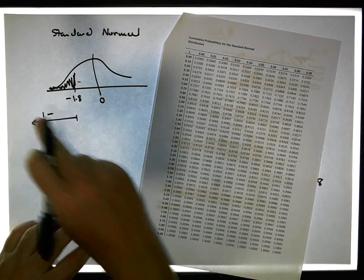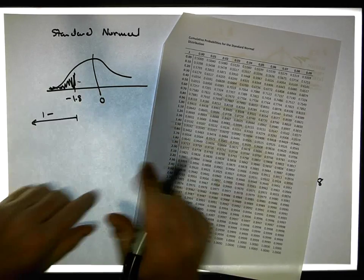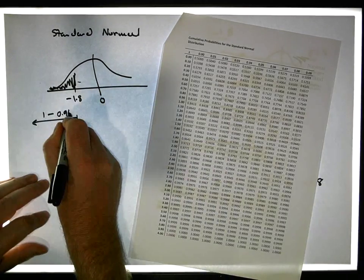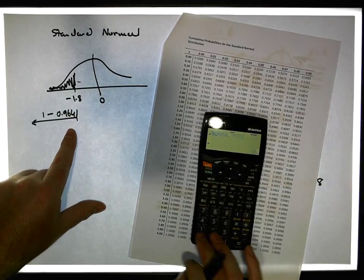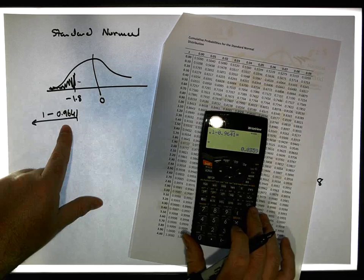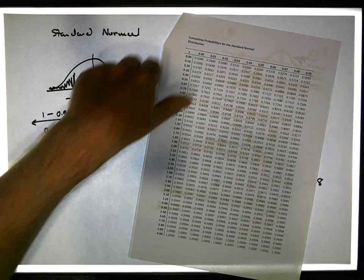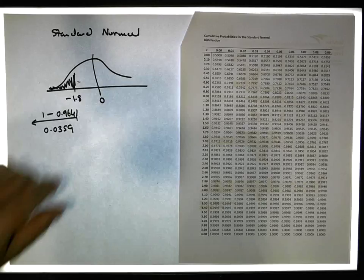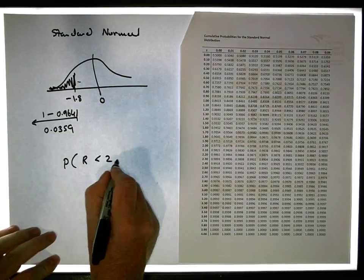When I look at 1.8 on my tables, I get 0.9641. So the area to the left of minus 1.8 is 1 minus 0.9641, which gives us a value of 0.0359.